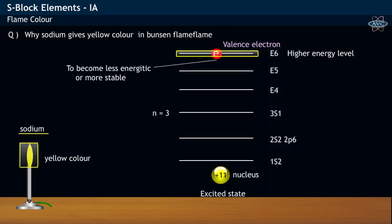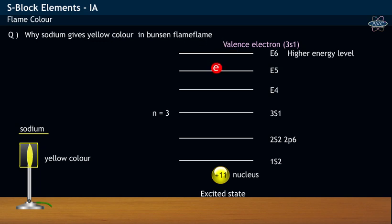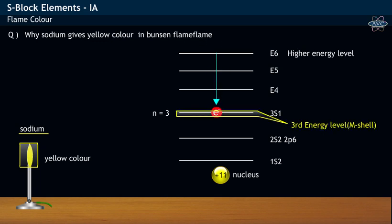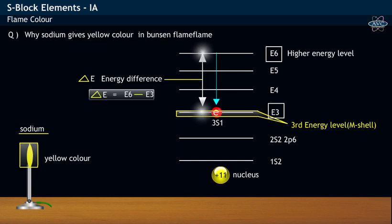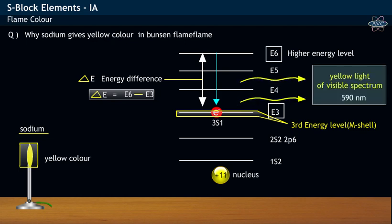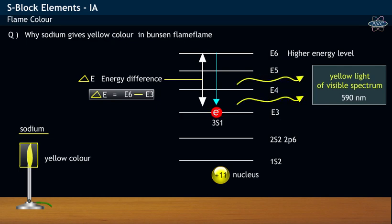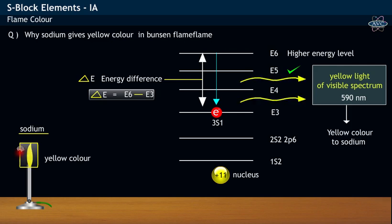In order to attain less energy and become more stable, the excited 3s1 electron jumps back to its original third shell. During this process, an energy equivalent to the difference between two energy levels is liberated as yellow electromagnetic radiation of the visible region. This liberation of yellow light during flame test gives yellow coloration to sodium.